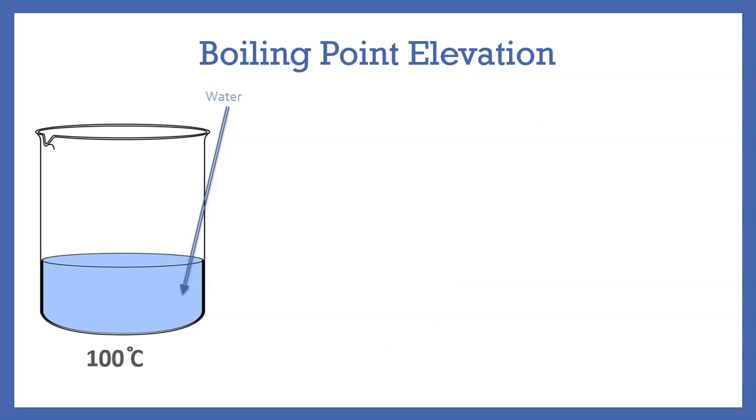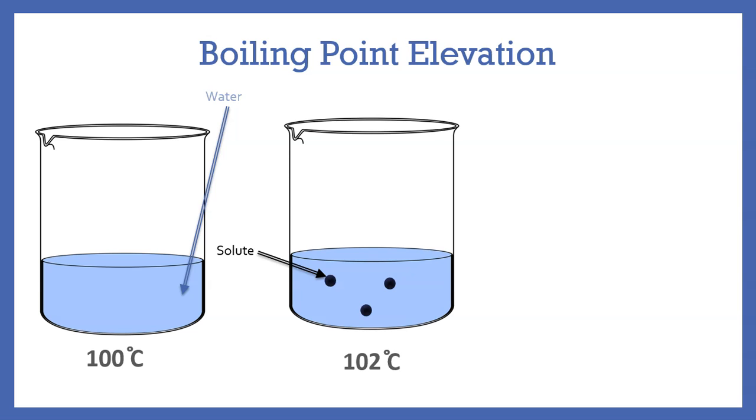Now let's discuss boiling point elevation. For water to boil, it will need to be at 100 degrees Celsius. Let's add solute particles to our water. For this to boil, it will need to now be at 102 degrees Celsius.